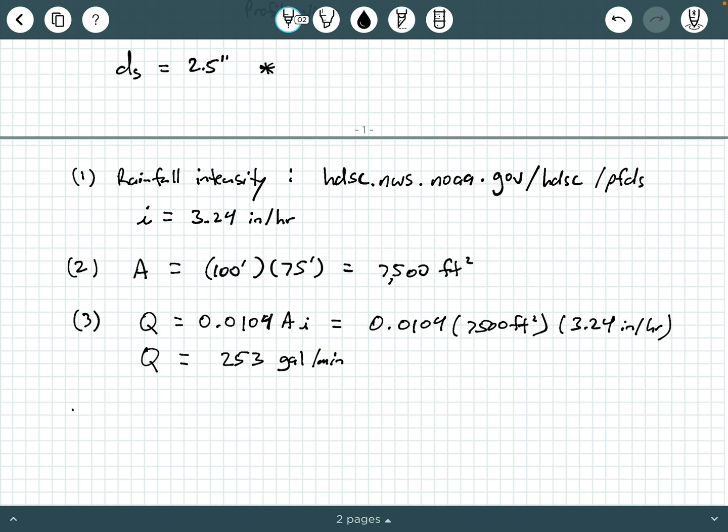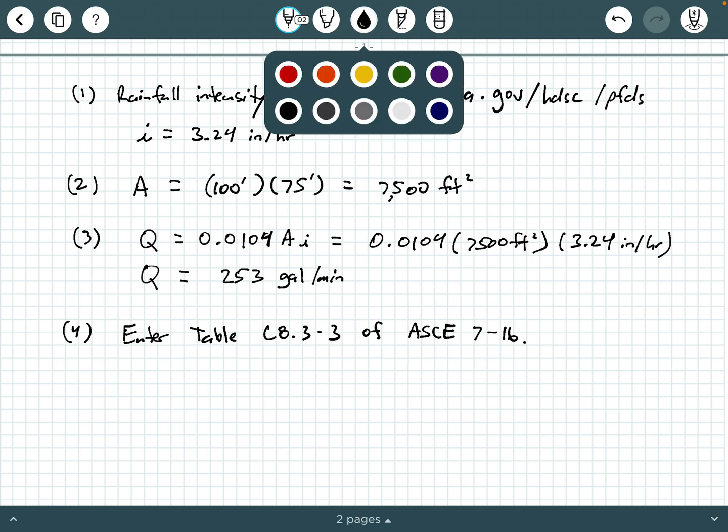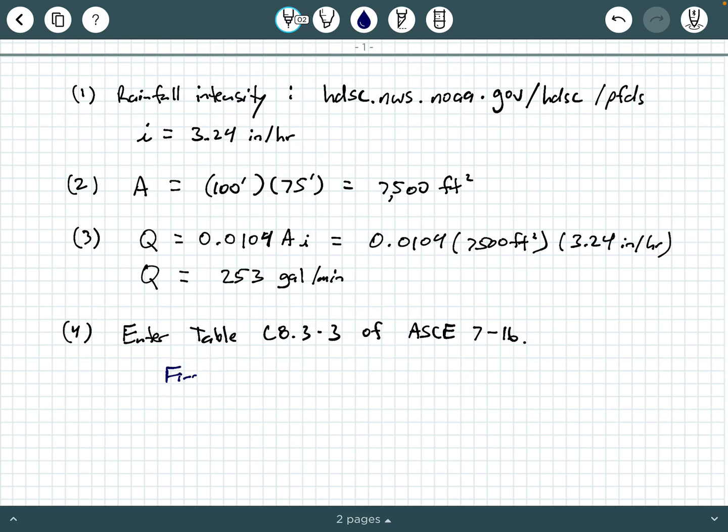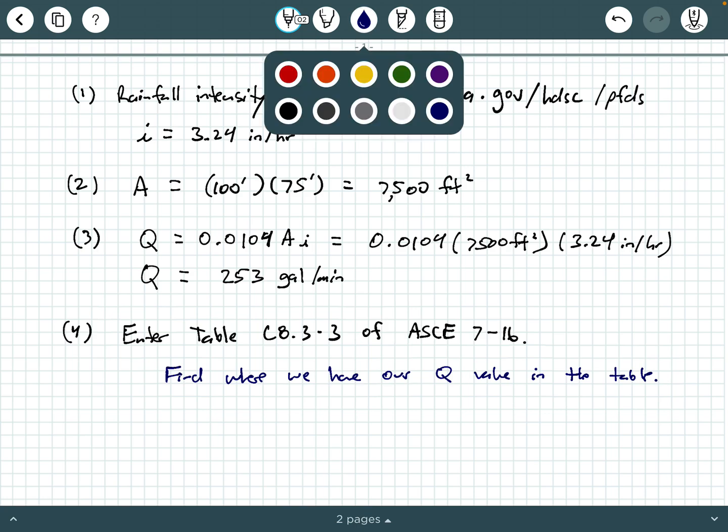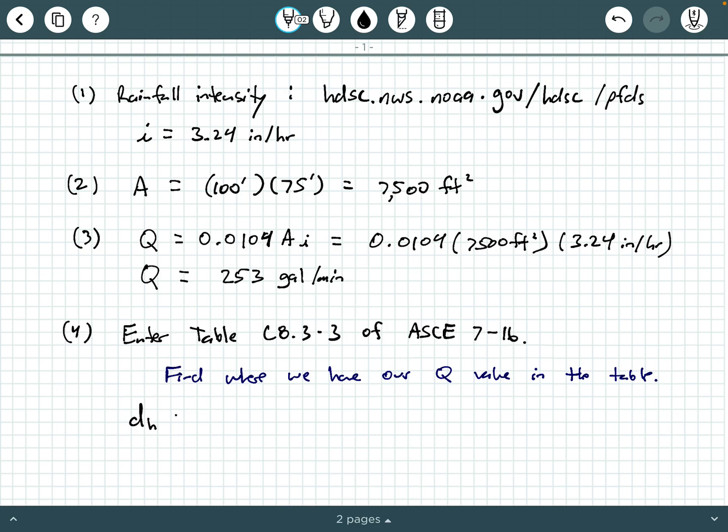Now, step four, we can enter table C8.3-3 of ASCE 7-16. Now, when you enter into that table, I'm going to enter into it myself right now. You're entering in the middle of the table. The values in the middle of the table, those are Q values. So, if you take a look here, you can find where we have Q equals about 253 gallons per minute in that table. Find where we have our Q value in the table.